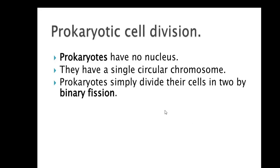In case of prokaryotic cell division, prokaryotes have no well-differentiated nucleus — that's why they are called prokaryotes, meaning primitive nucleus. Their genetic material and chromosomes are directly present in the cell cytoplasm. They don't have a distinct nucleus; they have a single circular chromosome, and their division is called binary fission.